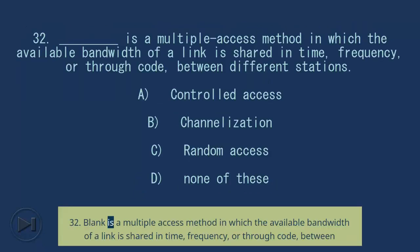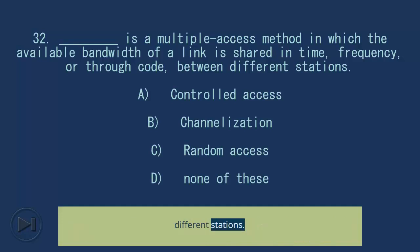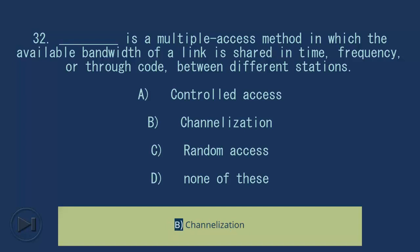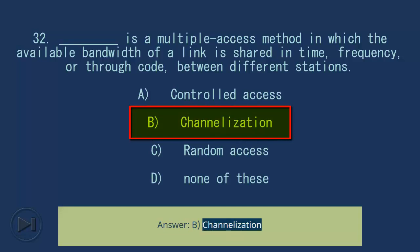Question 32: Blank is a multiple access method in which the available bandwidth of a link is shared in time, frequency, or through code between different stations. A) Controlled Access, B) Channelization, C) Random Access, D) None of these. Answer: B) Channelization.